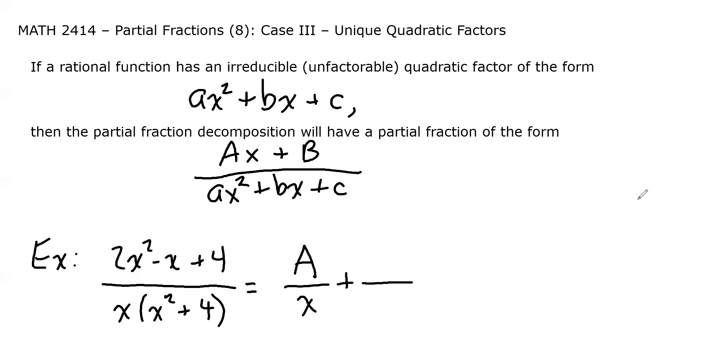And the irreducible quadratic factor is x² + 4. So it would get a factor that is a linear numerator. And since we've already used a, then we'll call this linear numerator bx + c. Just remember, for the quadratic partial fractions, the numerators can have x terms and they can also have constant terms.